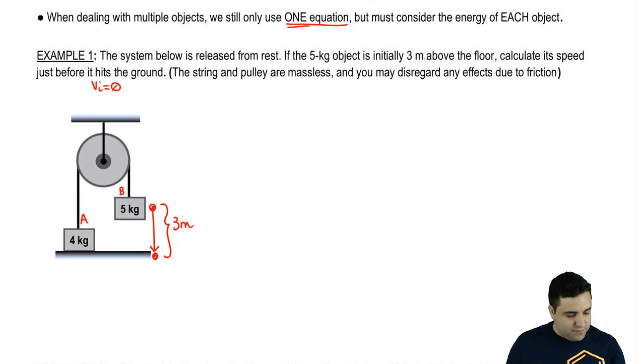So if the five kilogram is initially three meters above the floor, calculate the speed just before it hits the ground. So I want to know, what is the final speed of object B? VB final. But remember, this is a system. And in systems, when you have a connected system like this, all the objects move with the same speed, and they also have the same acceleration. So when I ask for the final velocity of the five kilogram, I could have just as well have asked for the final velocity of the four kilogram, and it would have been the same. I'm just going to think of this as V. They're all going to have the same V final.